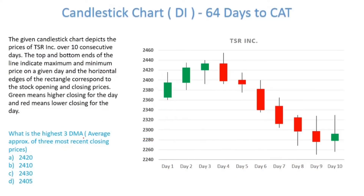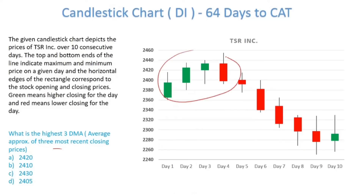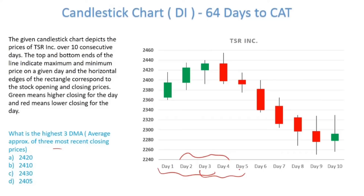What is the highest 3 DMA? The 3 DMA is the average of the three most recent closing prices. Looking at the trend, the stock is going upward and then taking a downward trend before stabilizing. The closing prices will obviously be higher in the range where it is increasing or just starting to decrease — so around days 1 to 3 or days 2 to 4, and possibly days 3 to 5.